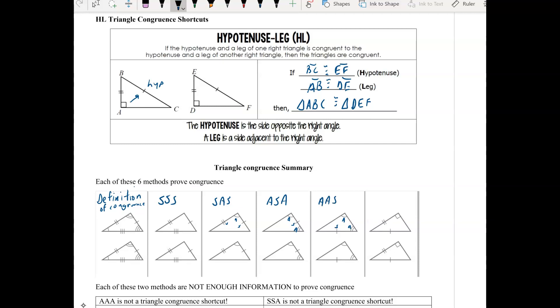And then the one we just saw, which we're not going to call it SSA, we're going to call it HL, hypotenuse leg.